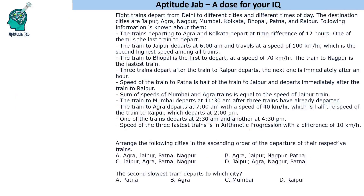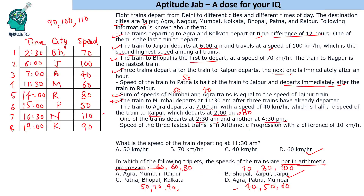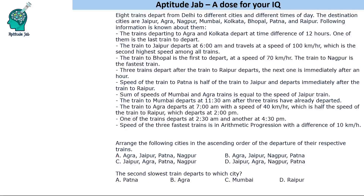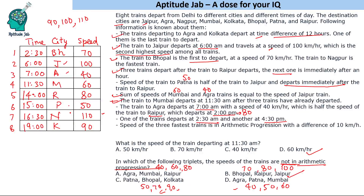Next question: arrange Agra, Jaipur, Patna, and Nagpur in ascending order of departure time. Jaipur comes first at 6 AM, then Agra at 7 AM, then Patna at 3 PM, and Nagpur after that — so the order is Jaipur, Agra, Patna, Nagpur. The second slowest train: the lowest speed is 40 (Agra), the second lowest is 50, which is Patna. So the second slowest train departs to Patna.